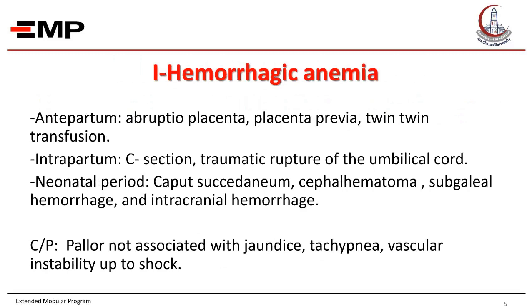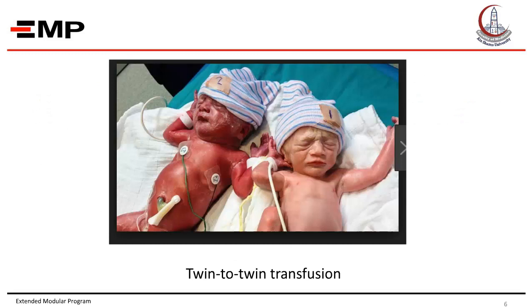The clinical picture of hemorrhagic anemia: usually severe pallor but not associated with jaundice, tachypnea, and vascular instability. This picture shows twin-twin transfusion, where one of the twins is plethoric while the other one is pale.